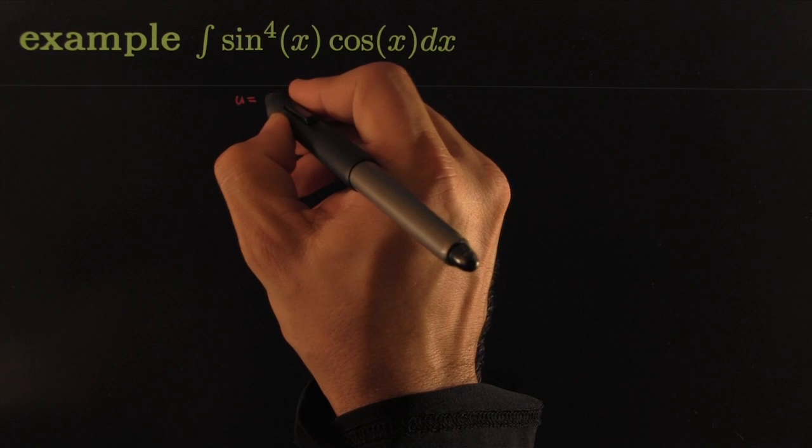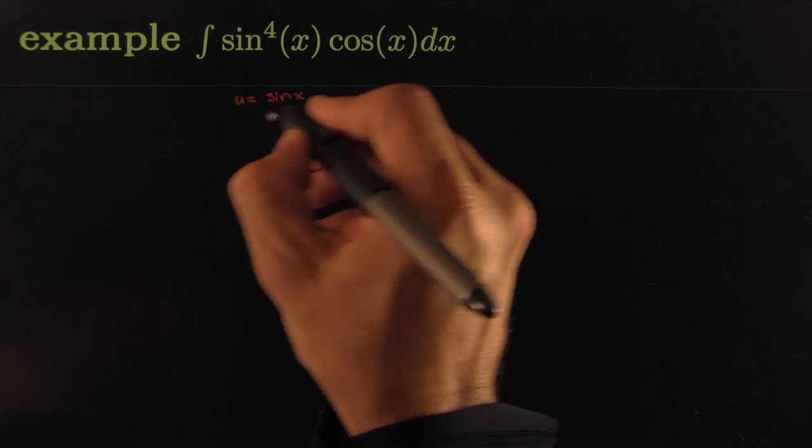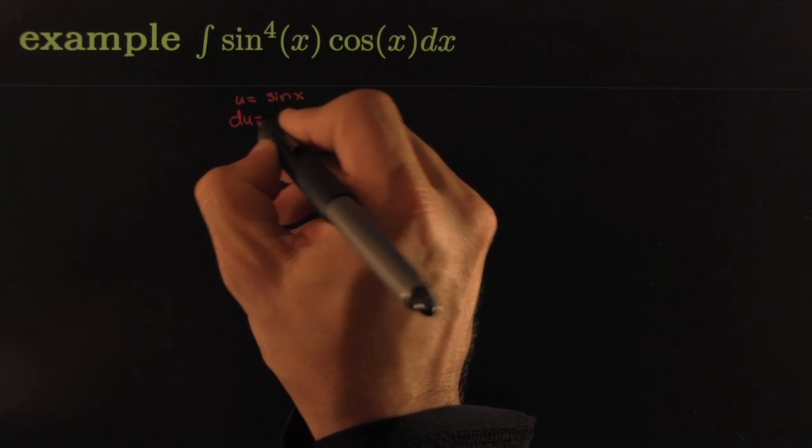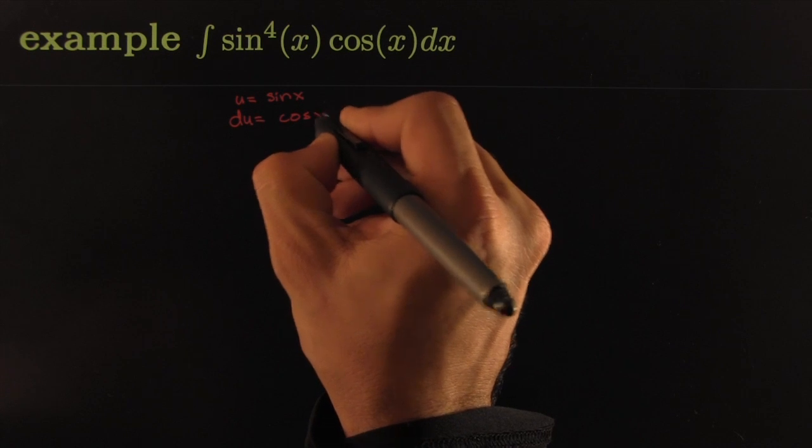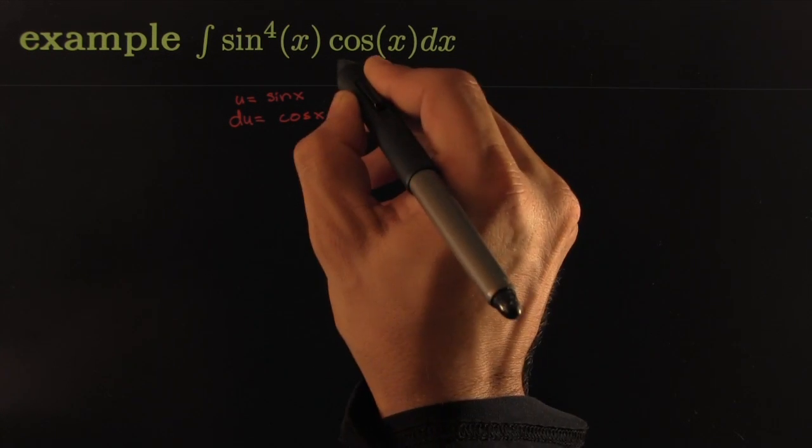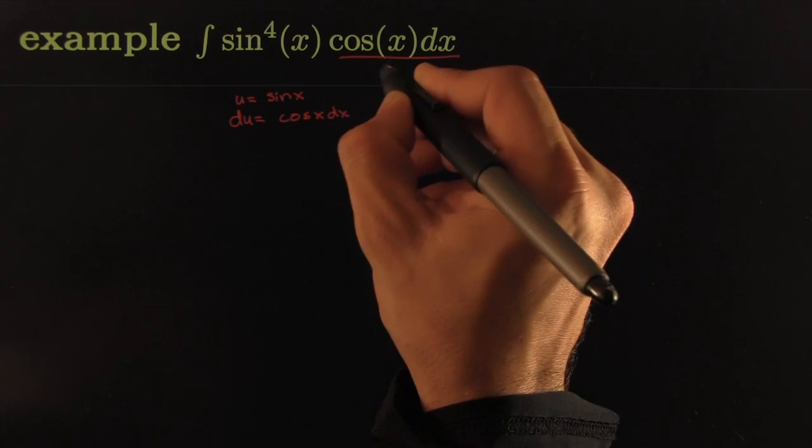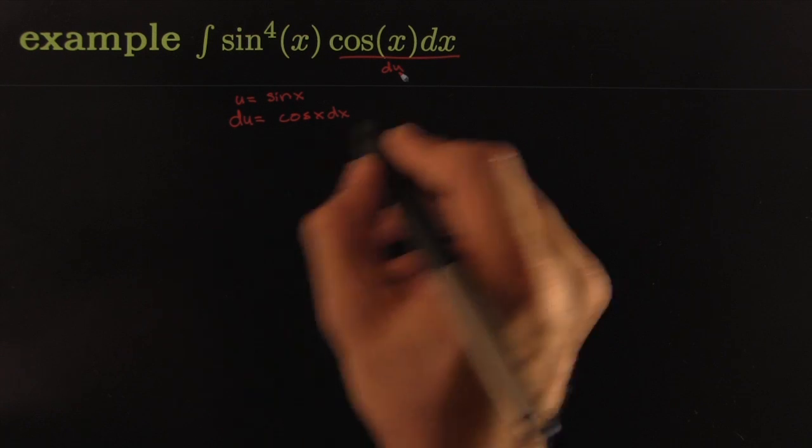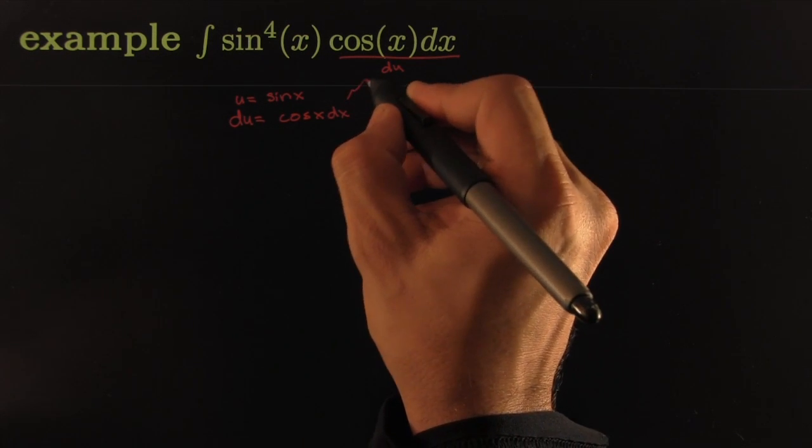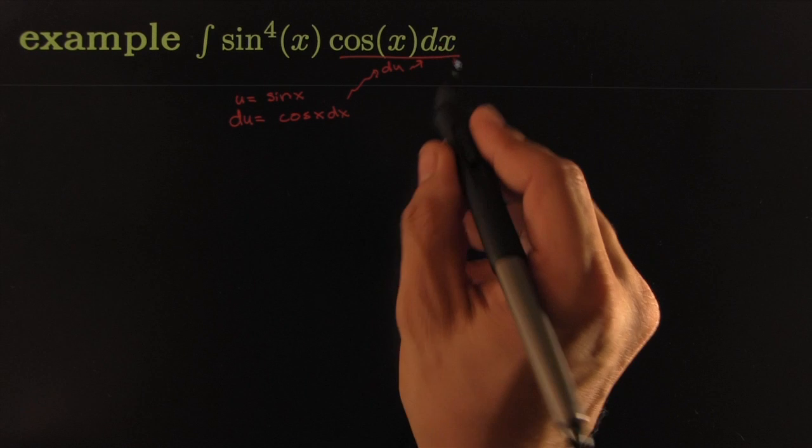set to sine of x. If you did that your differential would be forced to be cosine of x dx. And this of course is already set here. This would just be a du. That's what this is. Cosine x dx.